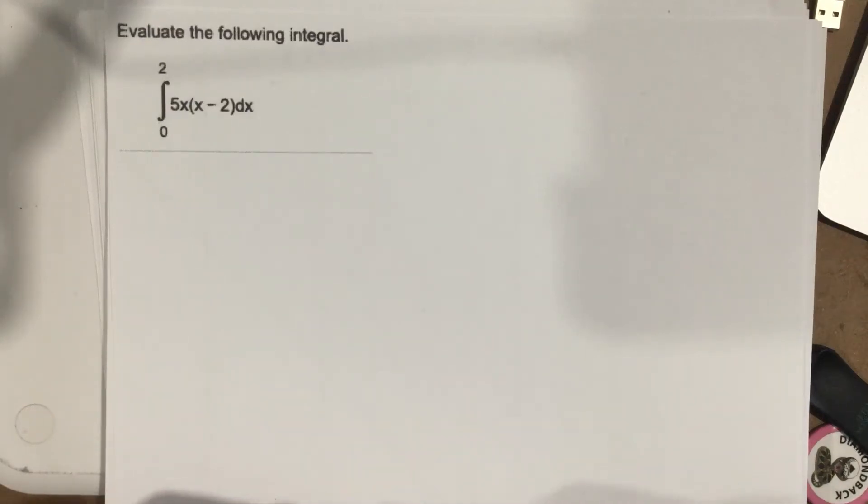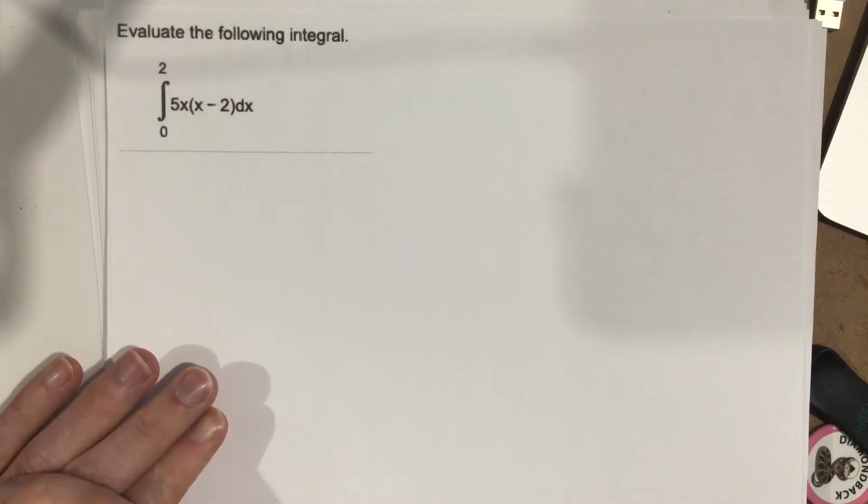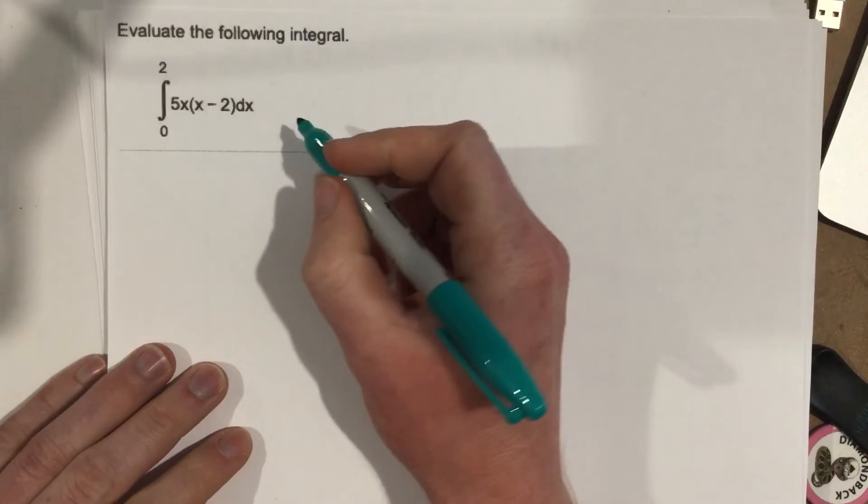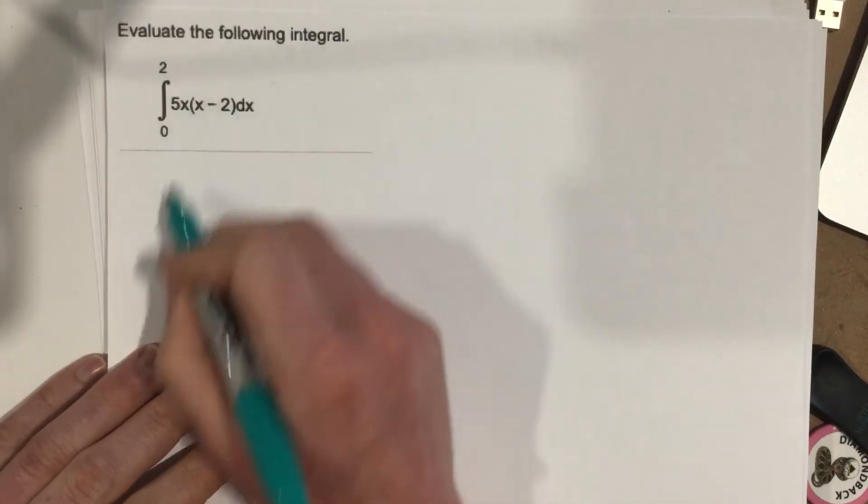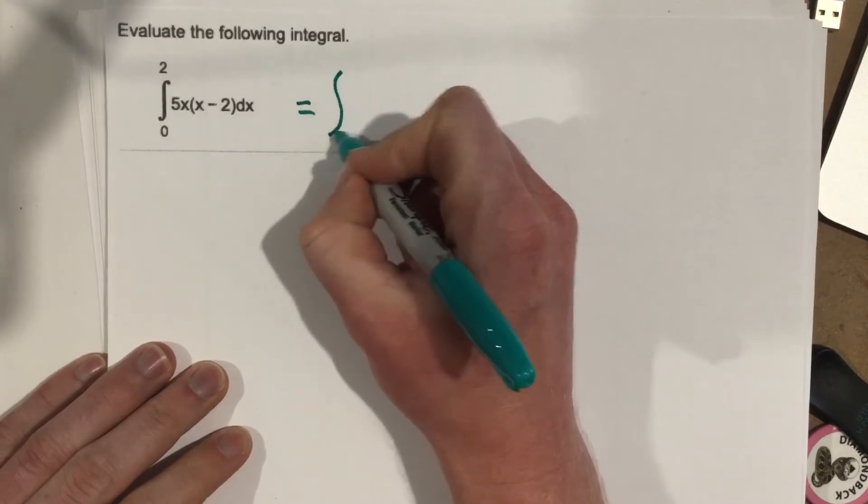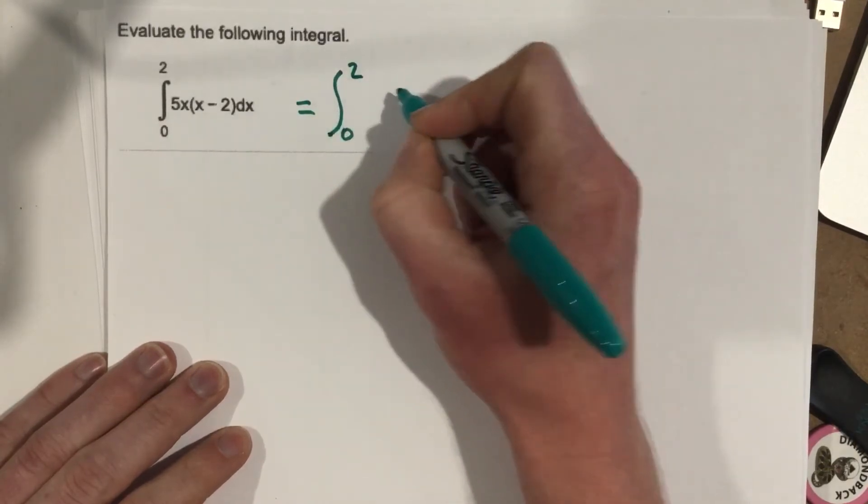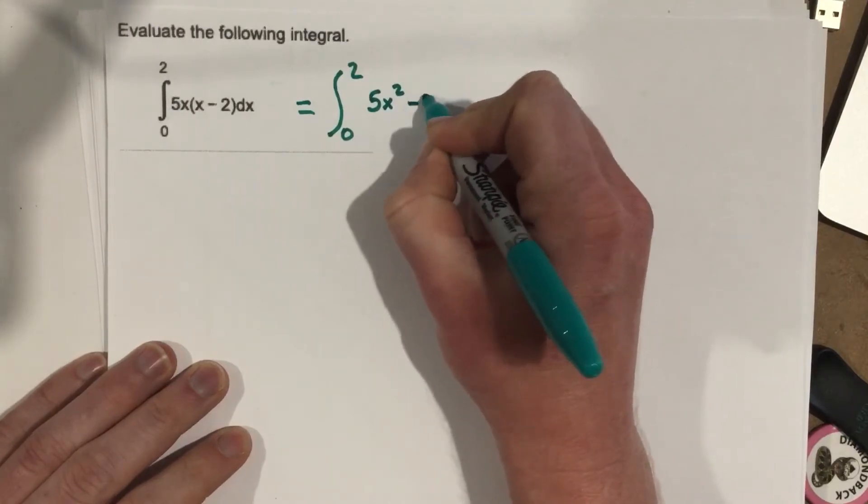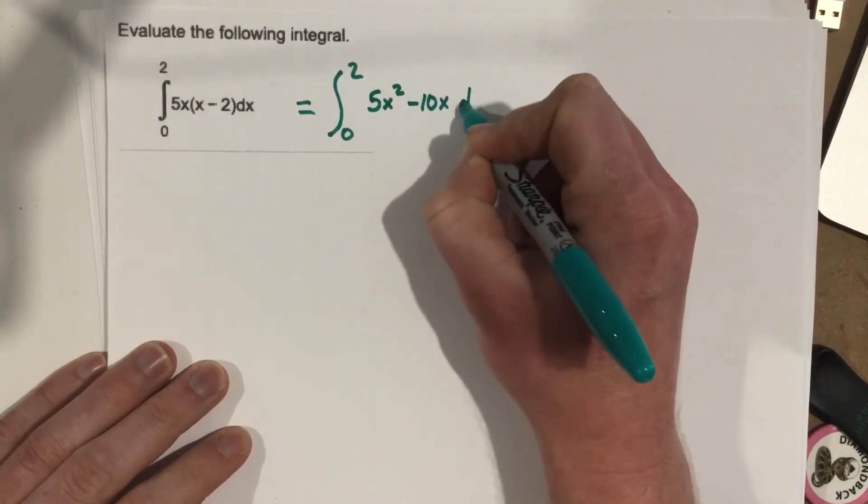This is problem number one from section 5.4. They're asking you to evaluate the following integral, so let's go ahead and do that. We're going to start out by distributing the 5x to each term. So when I distribute there, I'm going to still have the integral from 0 to 2 because I haven't found the antiderivative yet. All I've done is distribute to get 5x squared minus 10x dx.